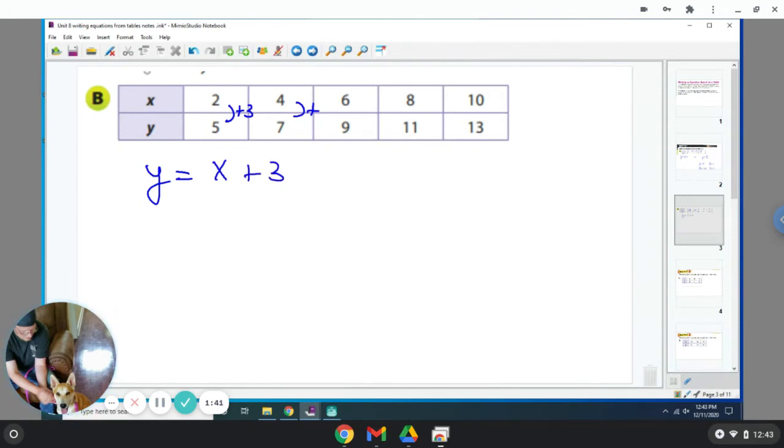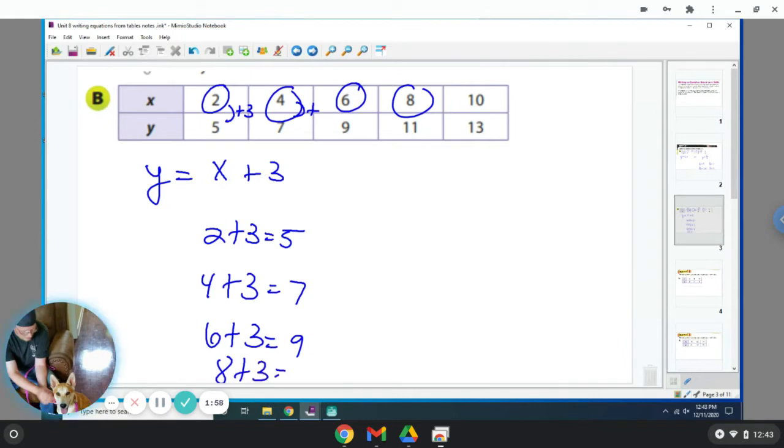So I can see if this works. So I can plug in when x is 2. So you have 2 plus 3 equals 5. I can plug in 4. 4 plus 3 is 7. I can plug in 6. 6 plus 3 is 9. I can plug in 8. 8 plus 3 is 11. So it works. So my equation is y is equal to x plus 3.